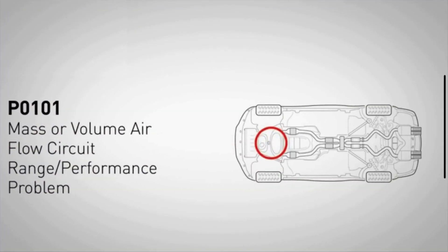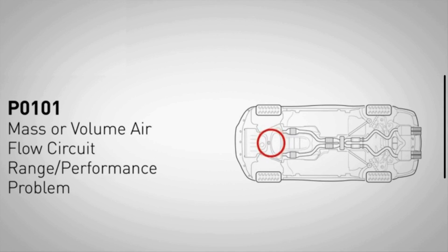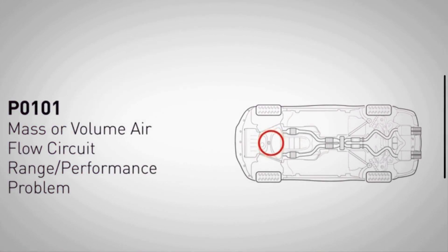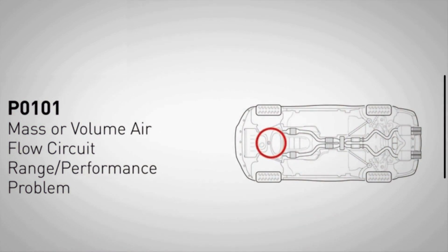The PO101 engine code is a diagnostic trouble code that indicates an issue with the mass airflow sensor. In simpler terms, it means that the MAF sensor signal is out of its expected range or does not correlate with the engine's operating conditions as determined by the engine control unit.